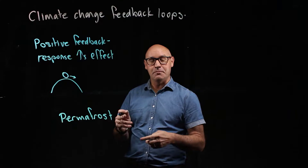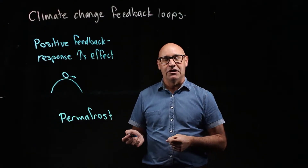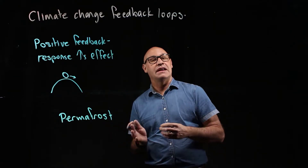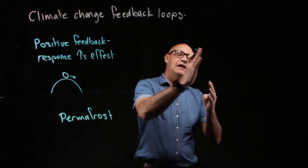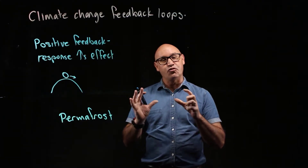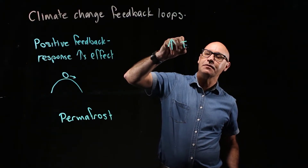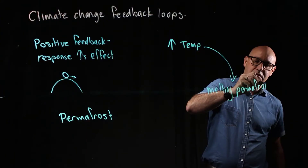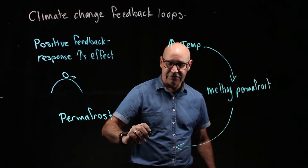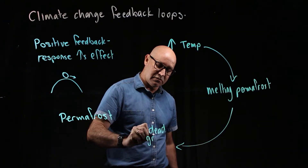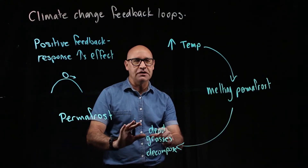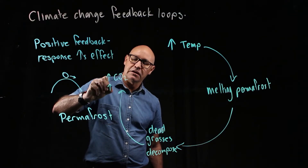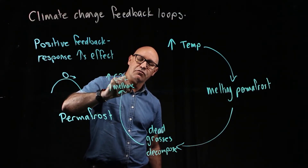The grass then gets decomposed by bacteria and other decomposers, and it releases carbon dioxide and methane gas into the atmosphere. Let's draw that feedback loop: we start with increased temperatures causing the permafrost to melt, which exposes the dead grasses. That decomposition of the dead grass releases greenhouse gases — carbon dioxide and methane — released by the decomposers.